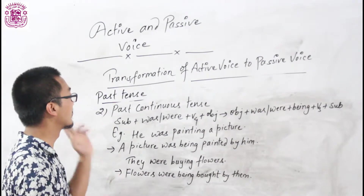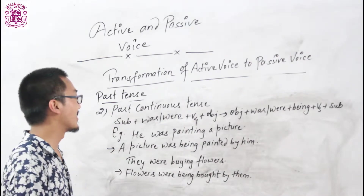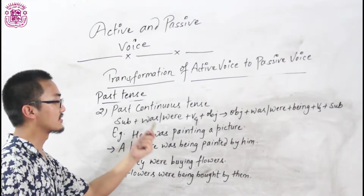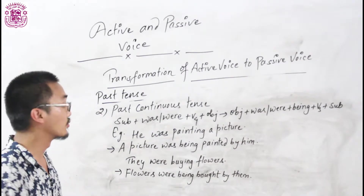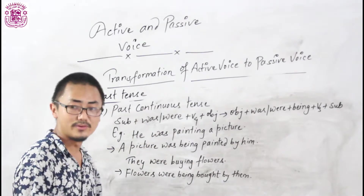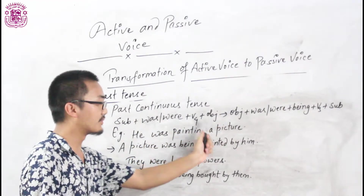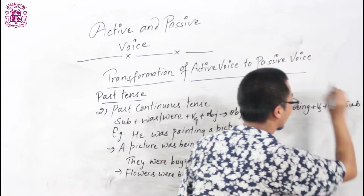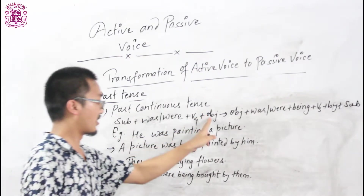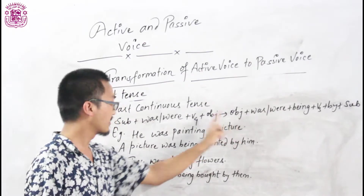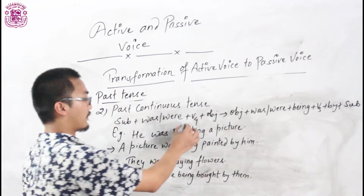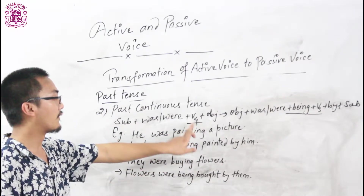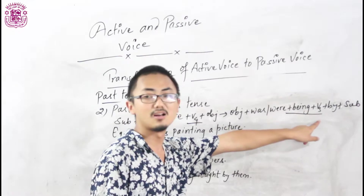Now we are going to learn about past continuous tense — how we change the past continuous structure into passive voice. The structure of past continuous tense is: subject plus was/were plus V1-ing plus object. When we change this structure into passive voice, subject becomes object and object becomes subject. 'Was/were' stays the same. And if V1-ing is used, then it is changed into 'being plus V3'. You have to remember: if V1-ing is used, then you have to keep 'being plus V3'.